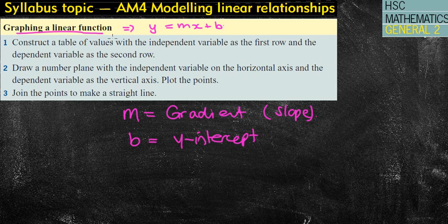So how do we graph a straight line graph? Very basic. First of all, you construct a table of values, which I'll show you for the next question. You then draw a number plane, or a Cartesian plane, with the independent variable and the dependent variable, which I'll explain to you as well. And then we join the points to make the straight line.